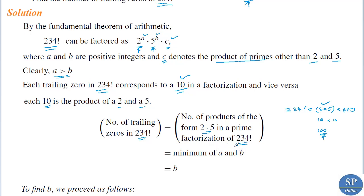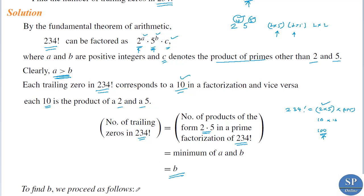The number of trailing zeros in 234 factorial is the minimum of a and b. For instance, if there are four 2s and two 5s, we can form only two products of 2×5, so 10 occurs twice. Since a is greater than b, the minimum of a and b is b. Therefore the number of trailing zeros in 234 factorial is b — the number of 5s in the prime factorization.